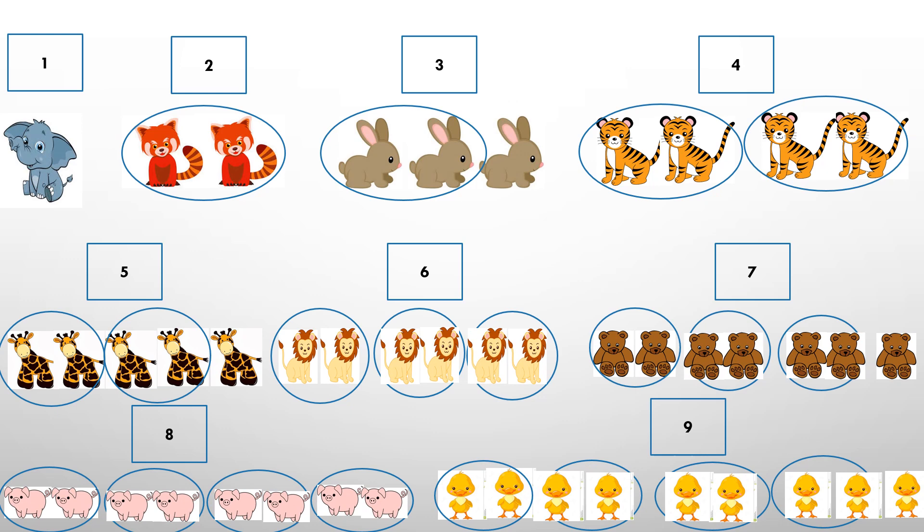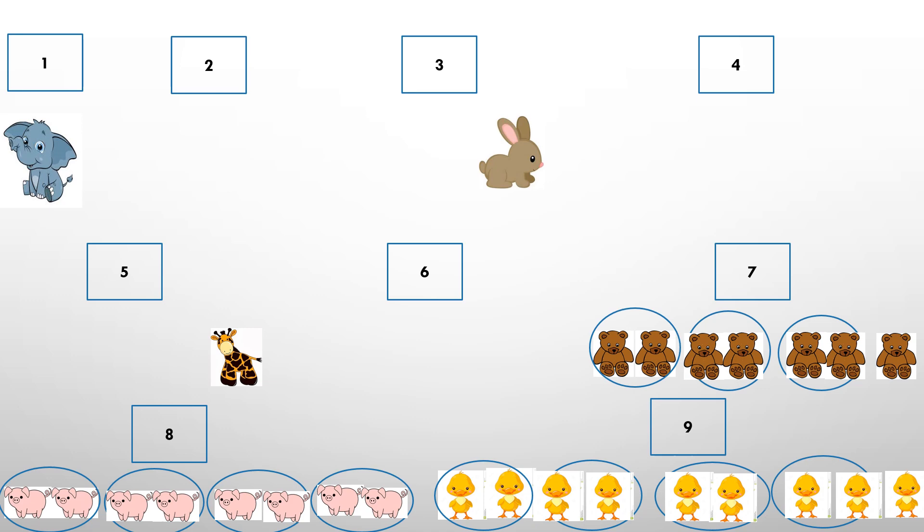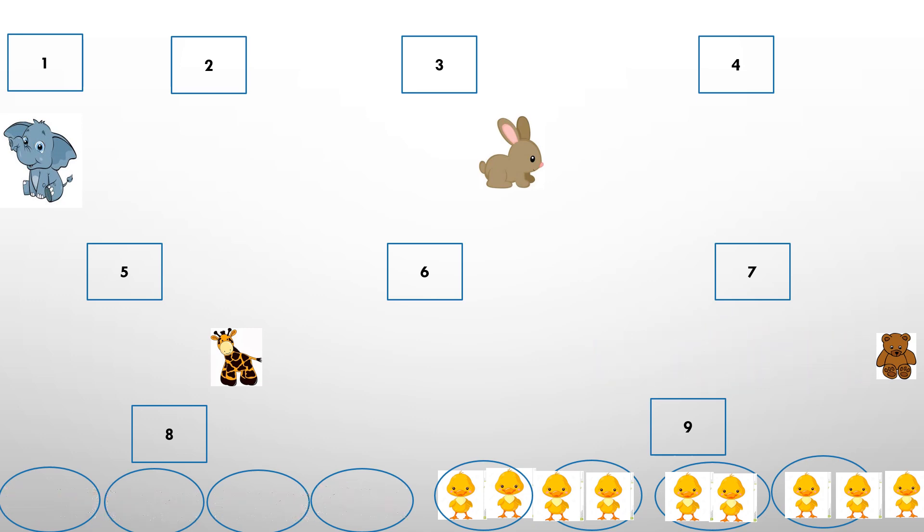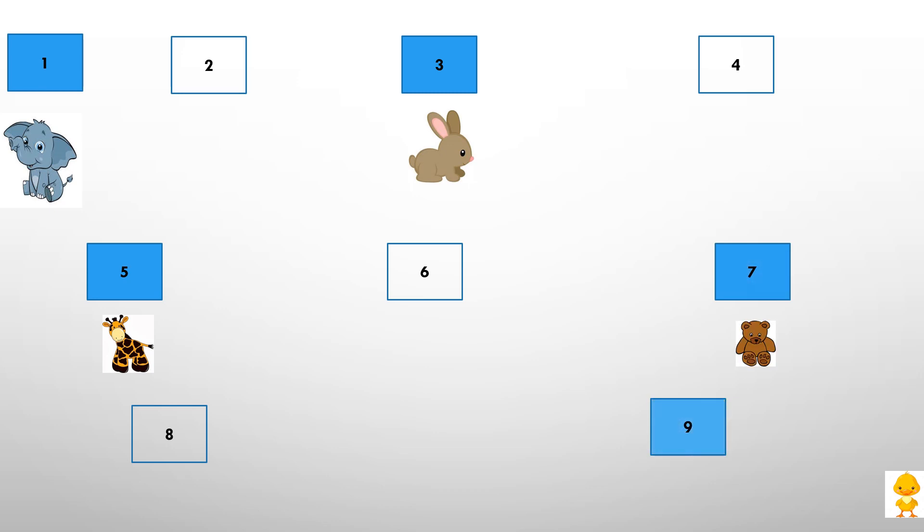Now we're going to send the pairs of animals to the circus. As you can see, one, three, five, seven, and nine are all odd numbers because there's one animal left out.